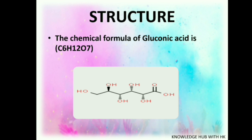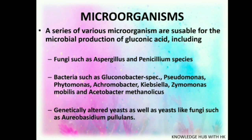Looking at the organisms responsible for the production of gluconic acid, a series of various microorganisms are usable, including fungi such as Aspergillus and Penicillium species, and bacteria such as Gluconobacter, Pseudomonas, Achromobacter, Klebsiella, Zymomonas mobilis, and Acetobacter methanolicus. Genetically altered yeast as well as yeast-like fungus such as Aureobasidium pullulans are also used for the production of gluconic acid.